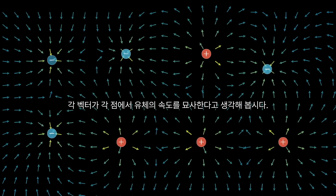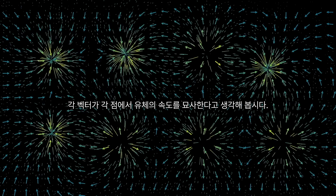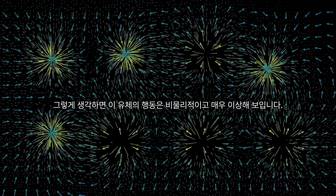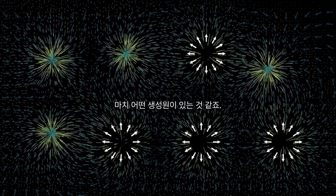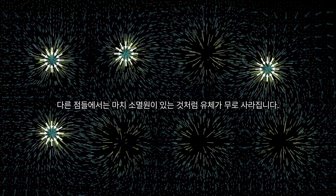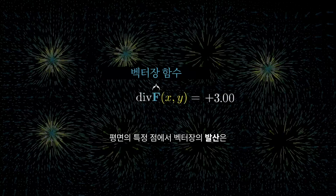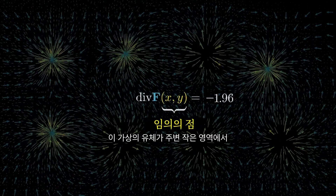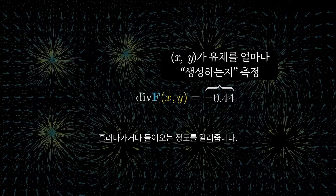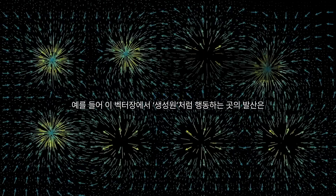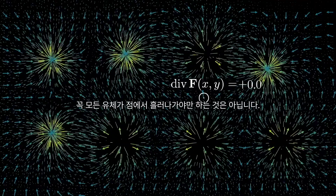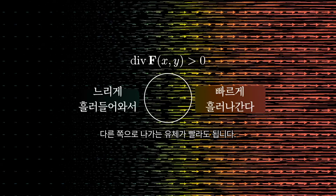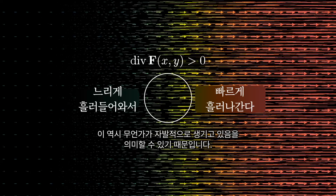Take a look at this vector field, and think of each vector as describing the velocity of a fluid at that point. Notice that when you do this, that fluid behaves in a very strange non-physical way. Around some points, the fluid seems to just spring into existence from nothingness, as if there's some kind of source there. Some other points act more like sinks, where the fluid seems to disappear into nothingness. The divergence of a vector field at a particular point tells you how much this imagined fluid tends to flow out of or into small regions near it. For example, the divergence evaluated at points that act like sources will give a positive number — even if fluid coming in from one direction is just slower than the flow going out in another direction, that still insinuates a certain spontaneous generation.